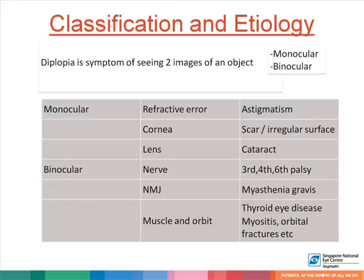Diplopia is a symptom of seeing two images of an object and can be either monocular or binocular. Monocular diplopia is defined as double vision that persists despite occlusion of the second eye. Monocular diplopia occurs from problems of the ocular surface, which could be astigmatic in nature from a refractive error, corneal scars and irregularities, or lenticular problems such as cataract.